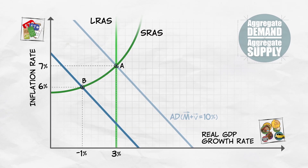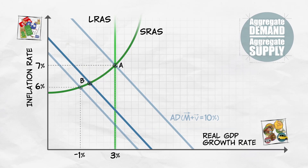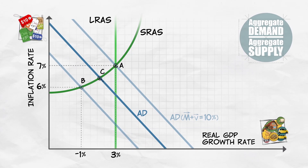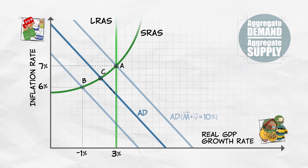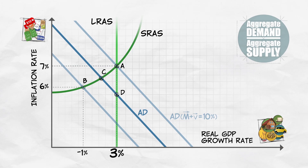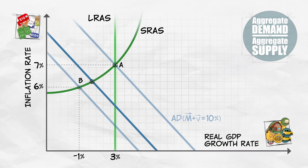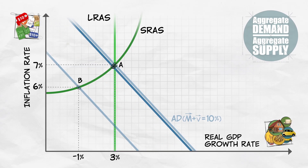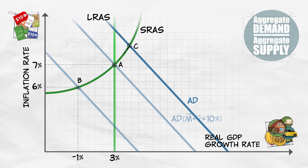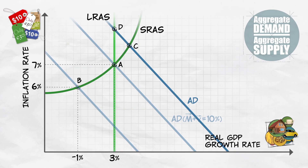So what happens when the Fed doesn't get its policy just right? If the Fed undershoots, or doesn't stimulate the economy enough to offset the aggregate demand shock, then growth will still be sluggish in the short run as the economy slowly adjusts back to the natural growth rate. More problematic is when the Fed overshoots. When the Fed increases the money supply beyond what's needed, the economy can overheat. Sure, we may get some more real growth in the short run, but we're also going to get more inflation, and price signals become distorted.